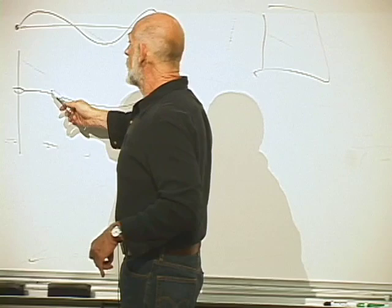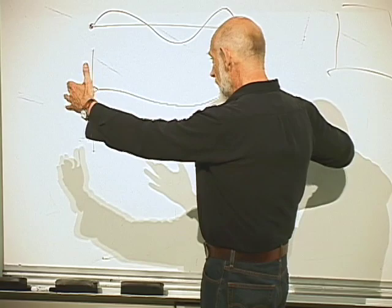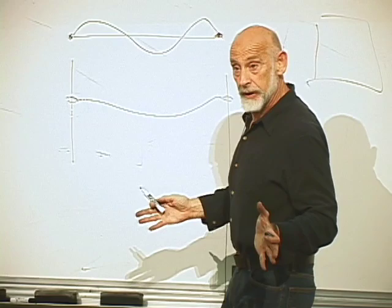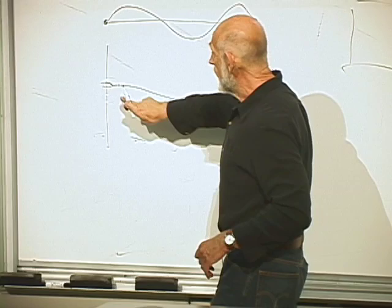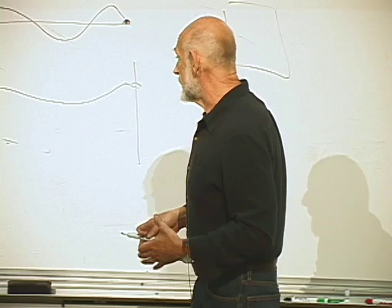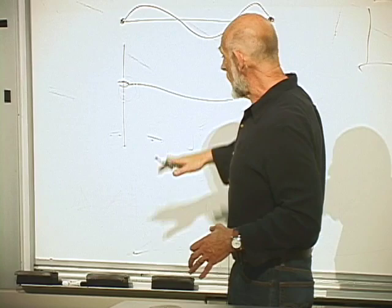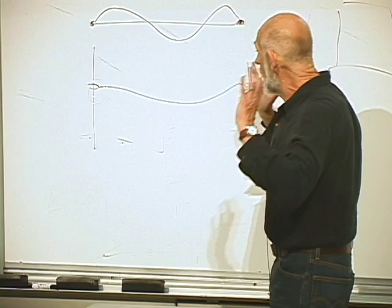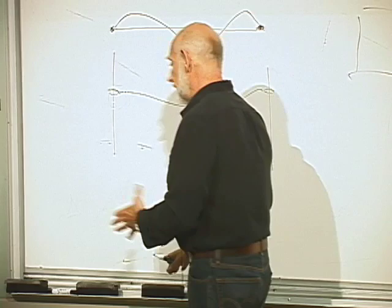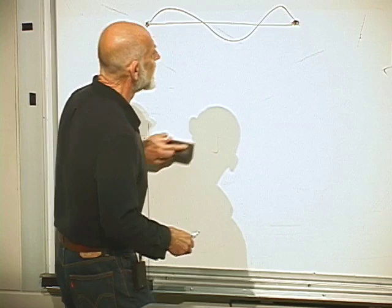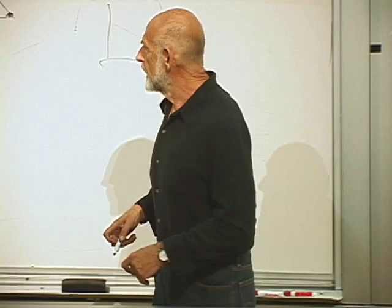The end effects turn out not to be important when the system is large — that has to be proved, but it's true. Far from the endpoints, the answers don't depend on the details of the boundary conditions. So let's consider the waves that can exist on a finite string of length L.